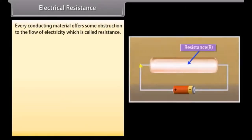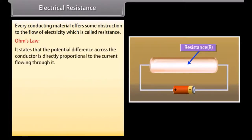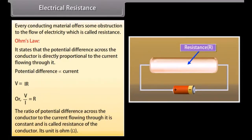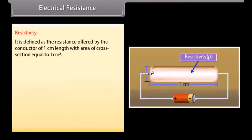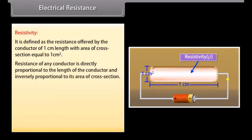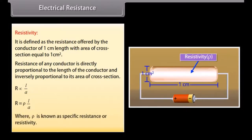Electrical resistance. Every conducting material offers some obstruction to the flow of electricity, which is called resistance. Ohm's Law states that the potential difference across the conductor is directly proportional to the current flowing through it: V = IR, or V/I = R. The ratio of potential difference across the conductor to the current flowing through it is constant and is called resistance of the conductor; its unit is Ohm. Resistivity is defined as the resistance offered by the conductor of 1 cm length with area of cross section equal to 1 cm². Resistance of any conductor is directly proportional to the length of the conductor and inversely proportional to its area of cross section: R = ρL/A, where ρ is known as specific resistance or resistivity.